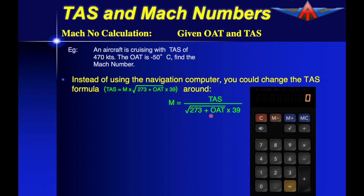Now at these altitudes the outside air temperature is almost always going to be a negative value. So we will usually have 273 plus a minus outside air temperature which effectively means 273 minus the number in this case 50 and then multiply that by 39.